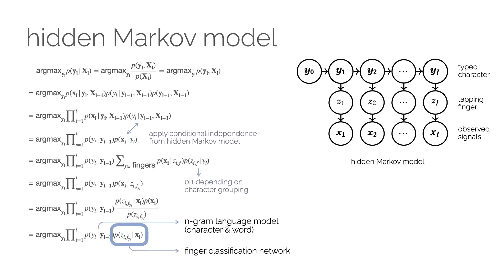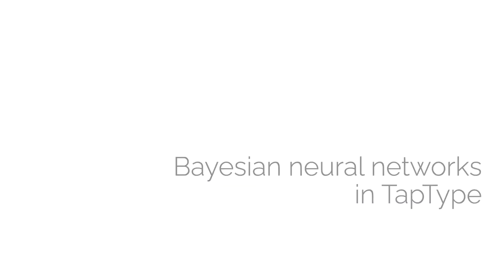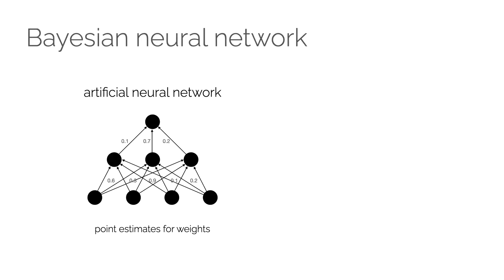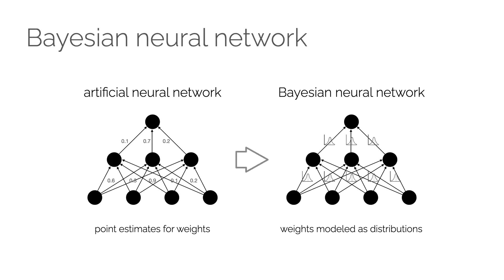The second factor is the probability that a certain finger caused the observed window of inertial signals, which we estimate using a finger classification network. Our Bayesian classifier is TapType's key component. Standard neural networks tend to be overconfident in their predictions, and their probability estimates are not representative of the true correctness likelihood. Bayesian neural networks in contrast tend to provide better output distributions — they learn a distribution over the weights using Bayesian inference, from which we derive a marginal distribution over the output, making them suitable for TapType's probabilistic approach.